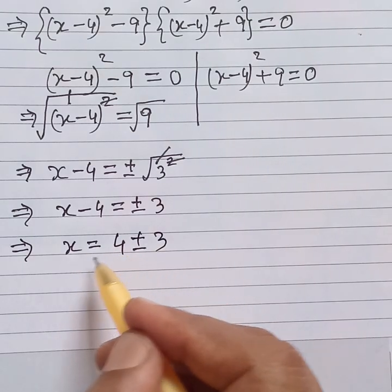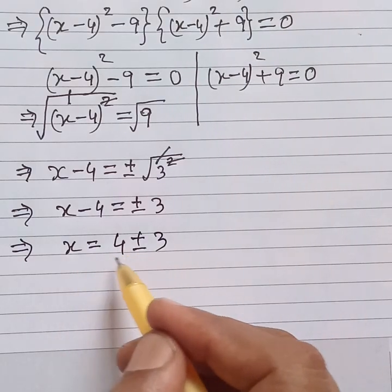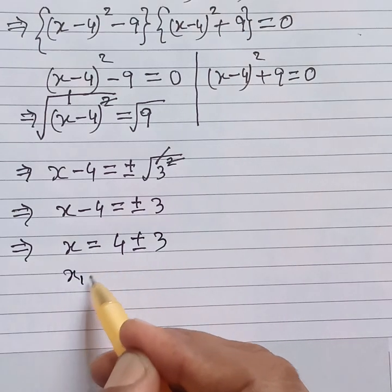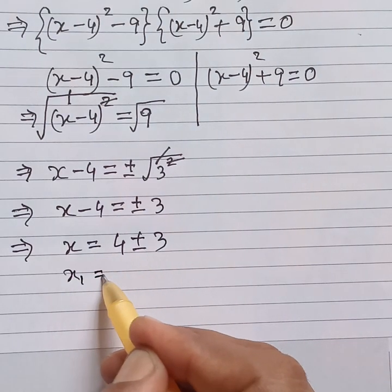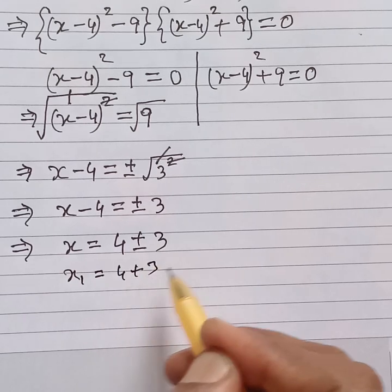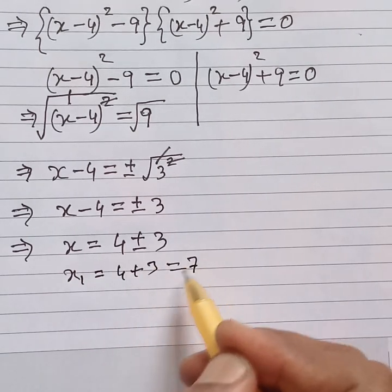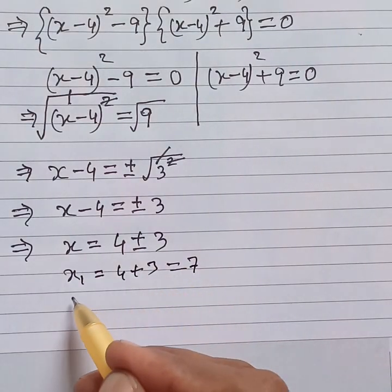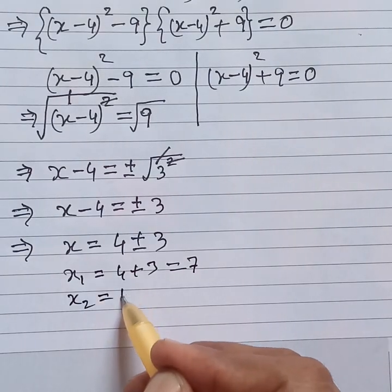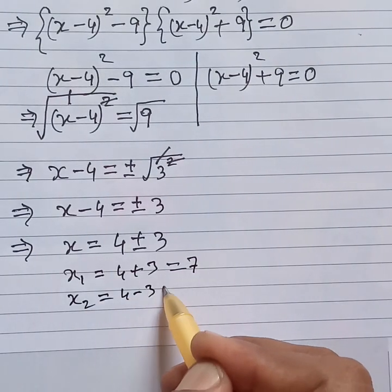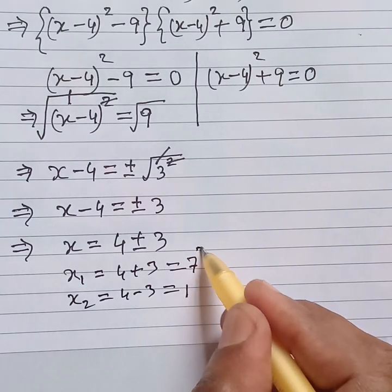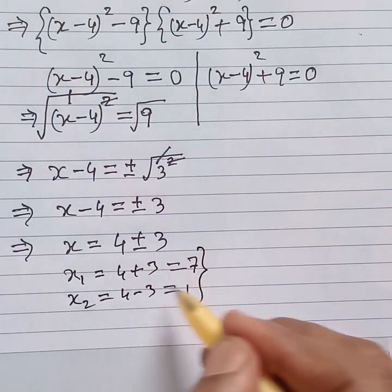Therefore x is equal to 4 plus or minus 3. This gives us 2 values of x: x1 is equal to 4 plus 3, which is 7, and x2 is equal to 4 minus 3, which is 1.